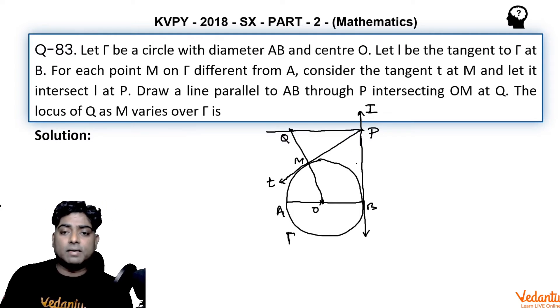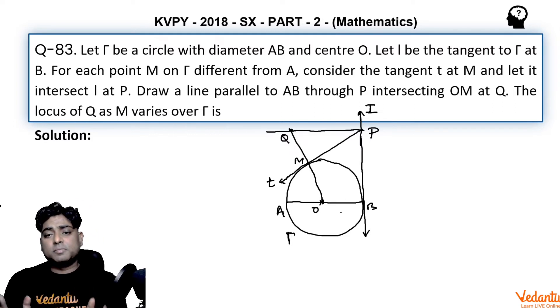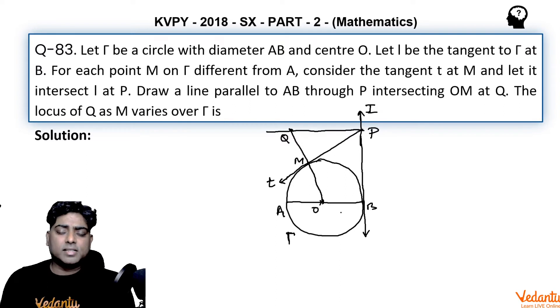If we consider this picture on XY plane, taking AB as X axis, O as origin, and taking some theta like M as (A cos θ, A sin θ), you will get point Q in terms of theta, then by eliminating theta you will get the locus of Q.